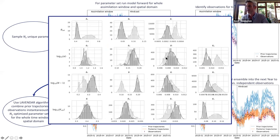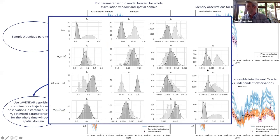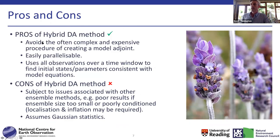We can then run those optimized parameters into the subsequent year and judge against independent observations in a hindcast. The output of LAVENDER looks something like this: you have prior parameter distributions in light gray and posterior parameter distributions in dark gray, which will probably narrow as you become more confident in the parameter values, and shift depending on what the technique determines needs to be done.